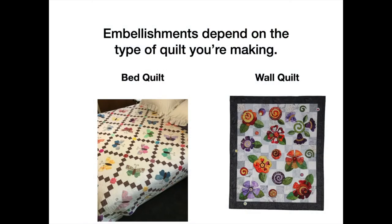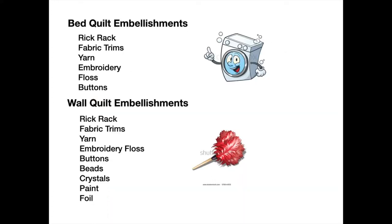Embellishments that you put on a quilt depend on the type of quilt that you're making — a bed quilt or a wall quilt. When you're making a bed quilt you can add rick-rack, fabric trims, yarn, embroidery, floss, and buttons.